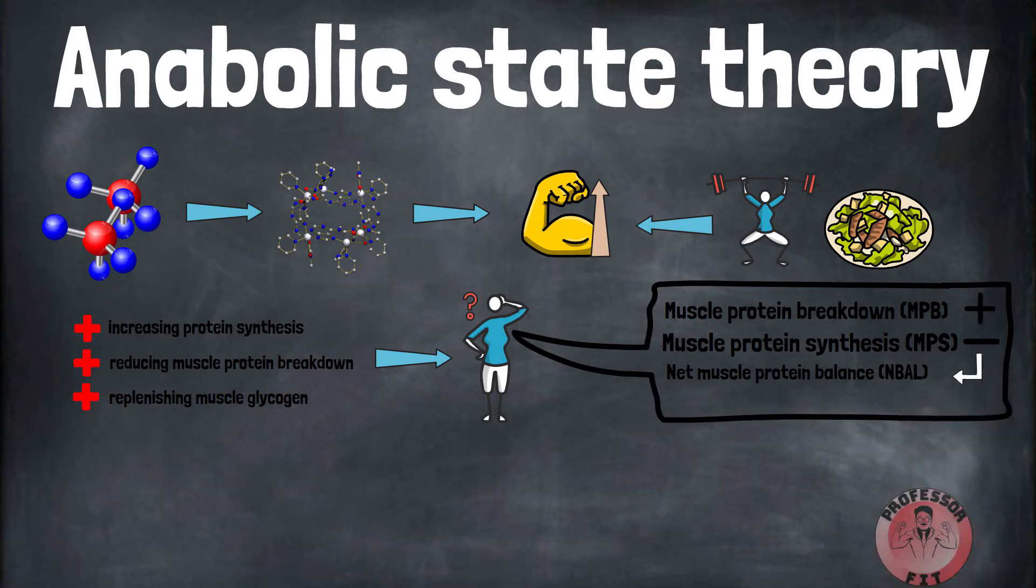Post-workout nutrition can affect these processes. Protein intake limits MPB and supports MPS. Carb intake also inhibits MPB and aids glycogen resynthesis. Glycogen provides energy for your muscles.